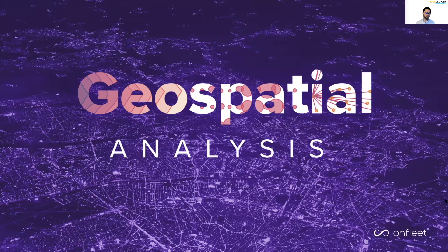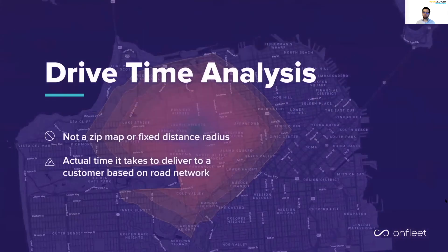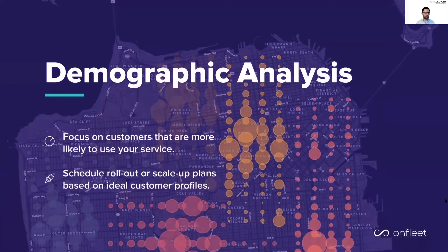Let's look at some examples. You can use a drive time analysis to determine the most optimal servicing area around a store or fulfillment center. This is much more than a postcode map or some fixed radius around a single point — this is an evaluation of your ability to service a particular customer in a given amount of driving time. Or a demographic analysis, so you can focus marketing efforts or service coverage to groups that have the highest propensity to use them. You can schedule rollout or scale-up plans based on ideal customer profiles.